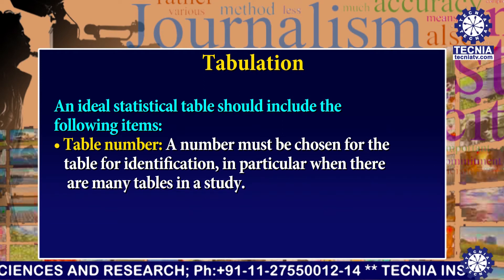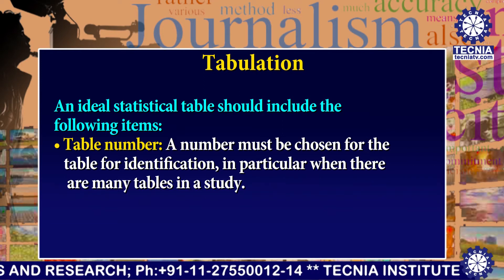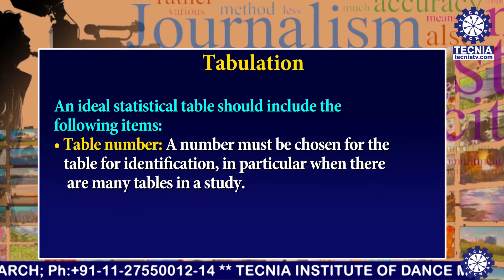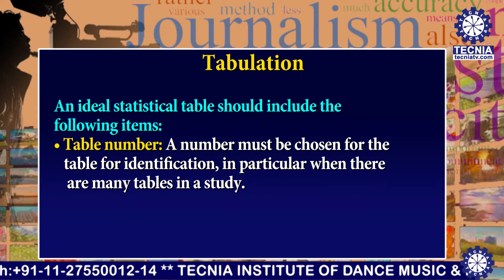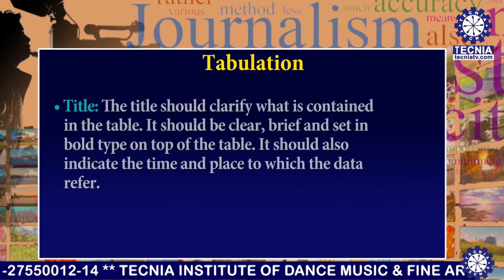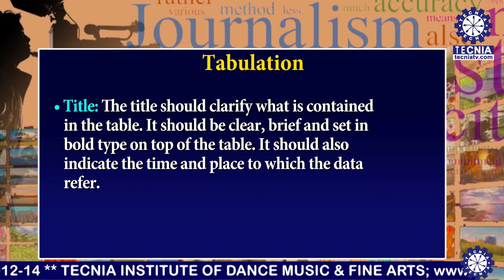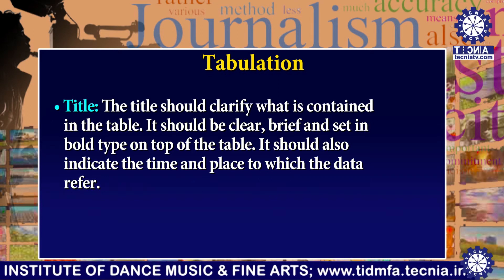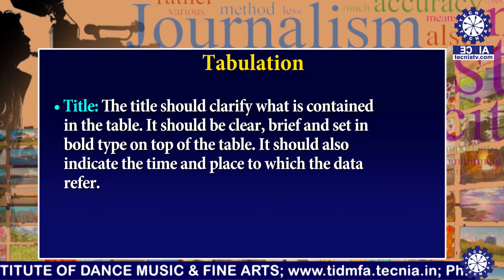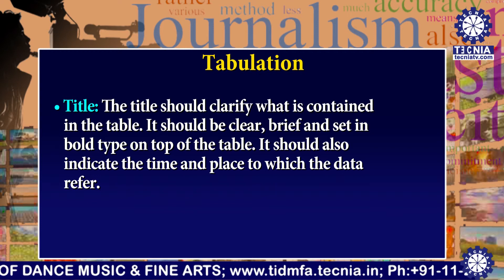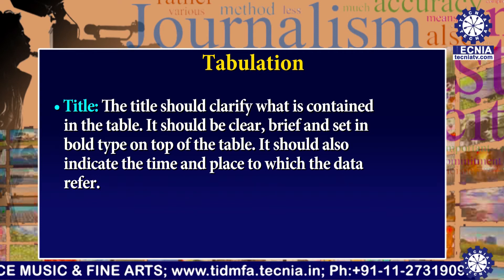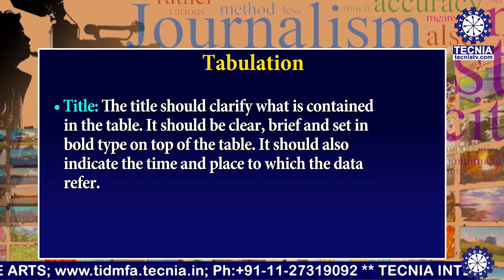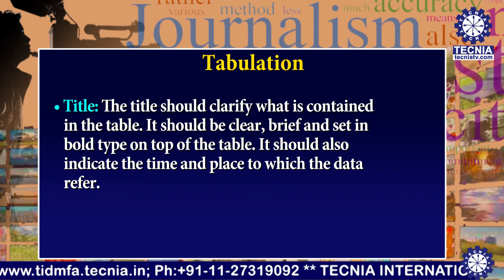An ideal statistical table should include the following items. First, table number — a number must be chosen for the table for identification, particularly when there are many tables in the study. Second, title — the title should clarify what is contained in the table. It should be clear, brief, and set in bold type on top of the table. It should also indicate the time and place to which the data refer.